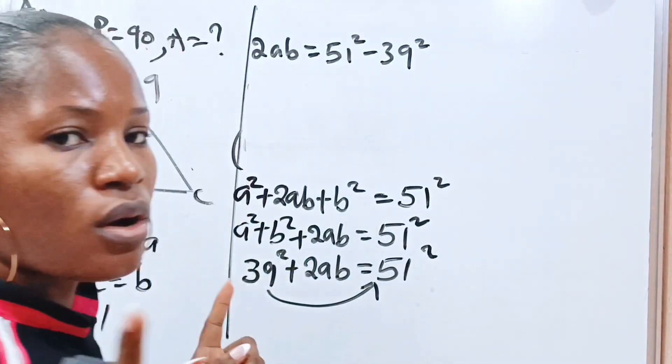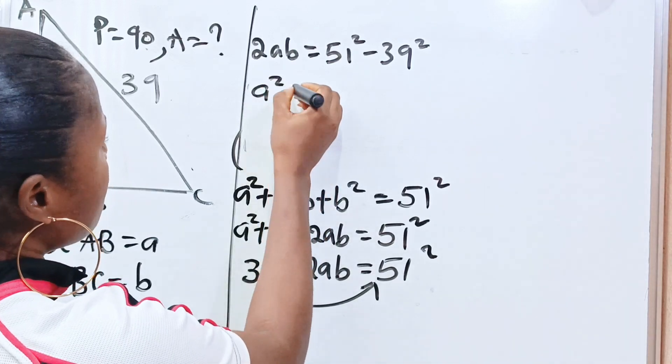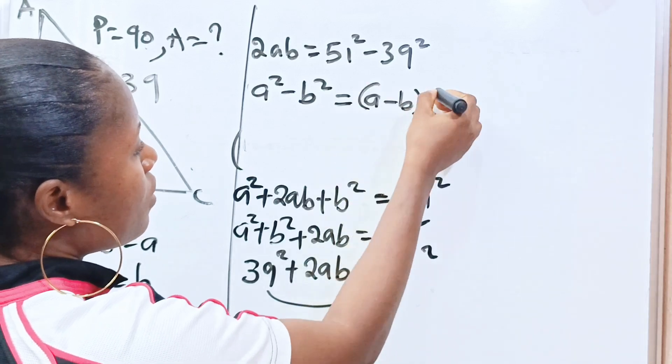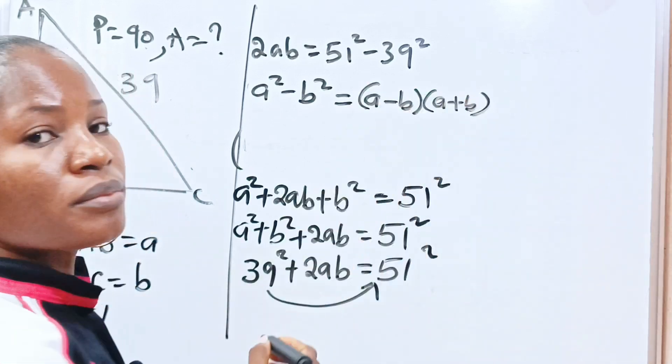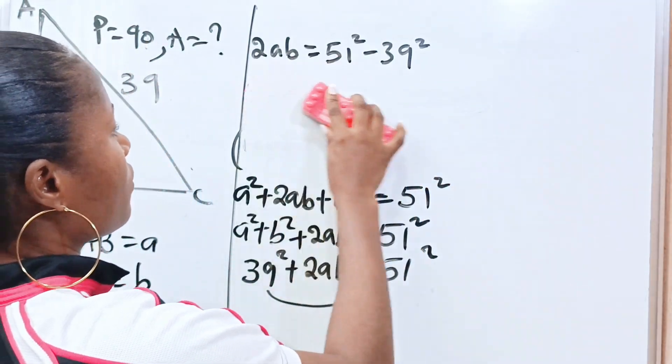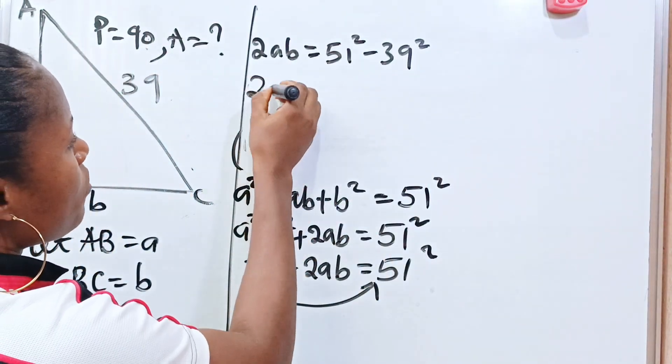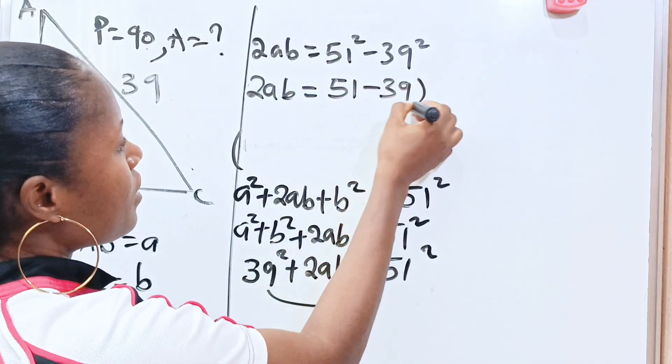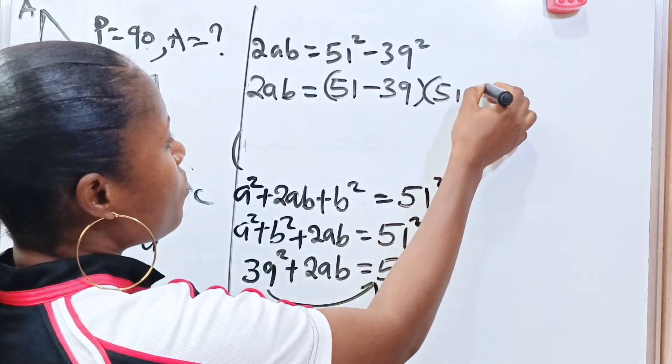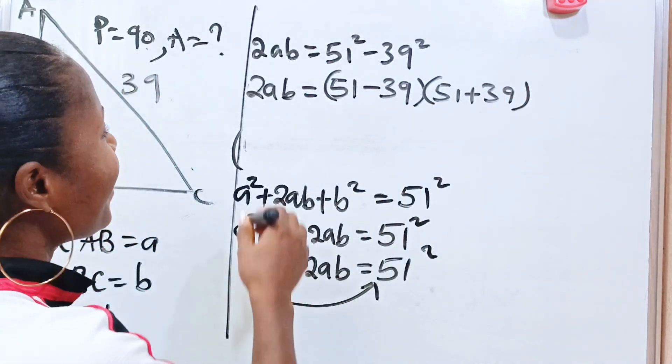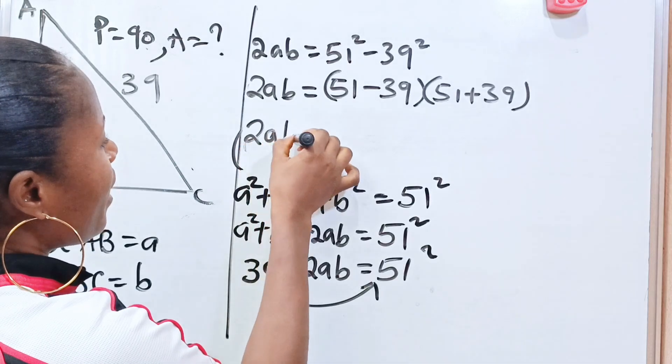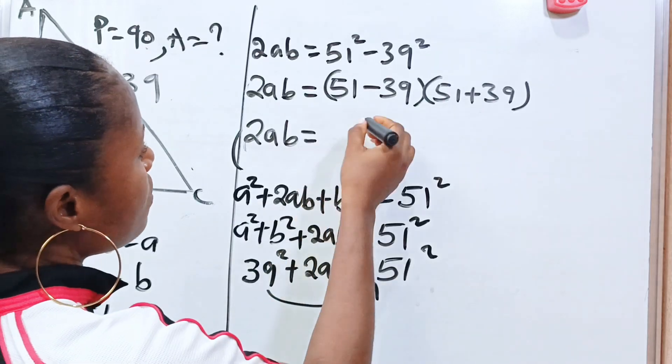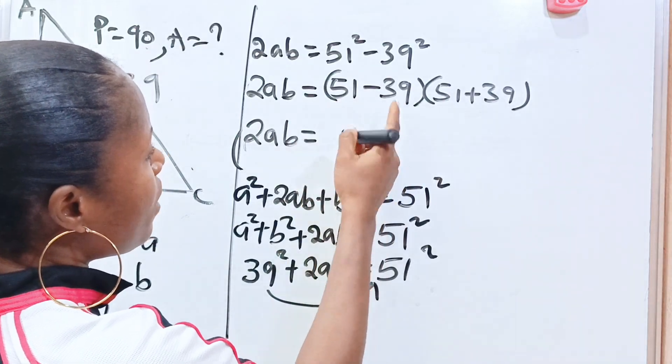Now, remember that a squared minus b squared is equal to a minus b times a plus b. So we have 2ab is equal to 51 minus 39 multiplied by 51 plus 39. We give us, 1 minus 9 is 2 and 4 minus 3 is 1, so we have 12 multiplied by 51 plus 39, which is 90.